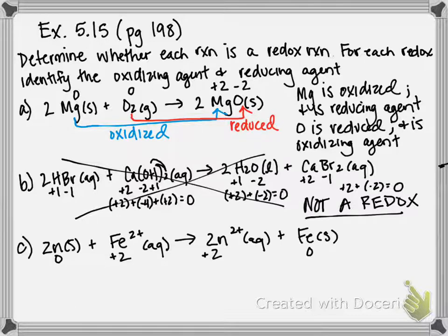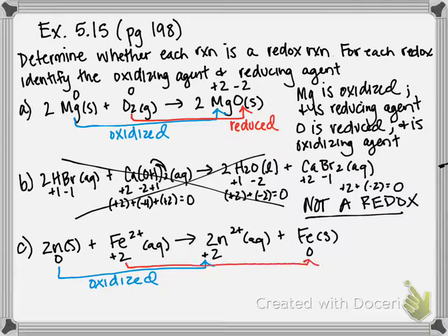So now we can compare between the reactants and product. Zinc is going from zero to plus two, that means it is being oxidized. It's getting more positive. Iron is going from plus two to zero, meaning it's getting more negative, and therefore, it is reduced.